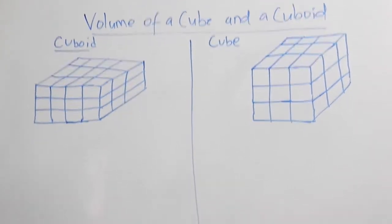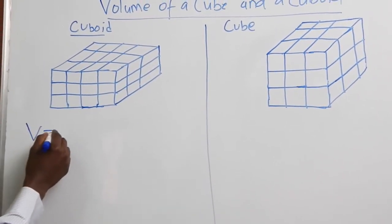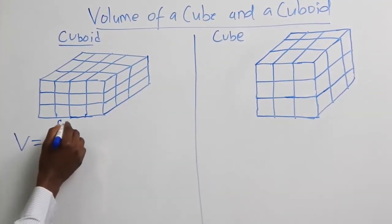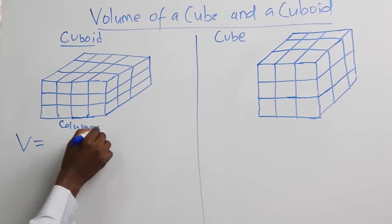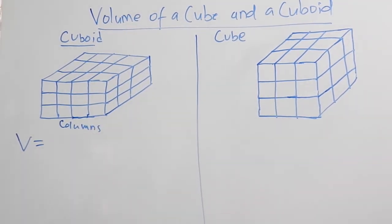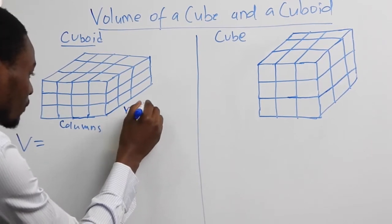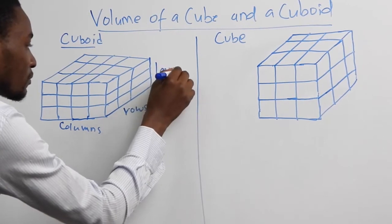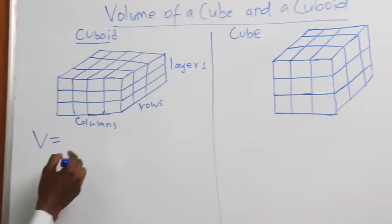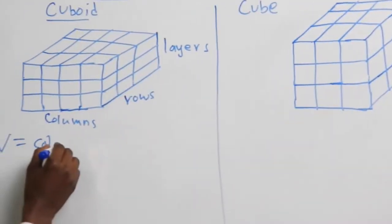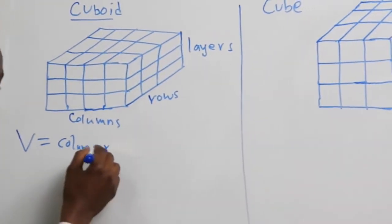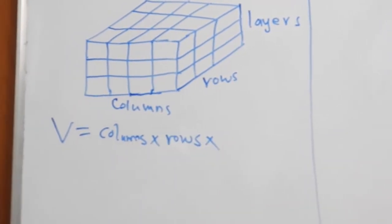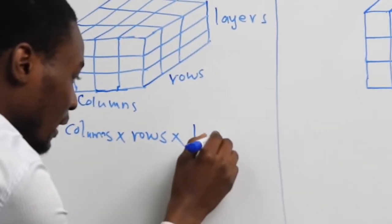We already know that the volume of a cuboid is given by the number of cubes along the columns times the number of cubes along the rows times the number of cubes along the layers. So we have: volume is equal to the number of cubes along the columns times the number of cubes along the rows times the number of cubes along the layers.